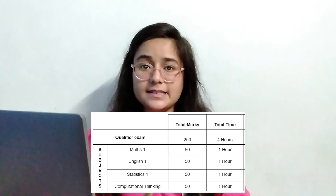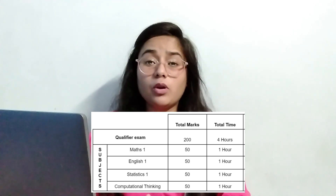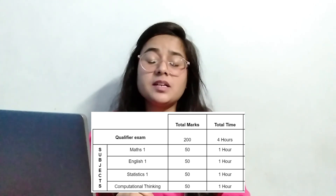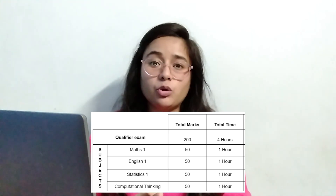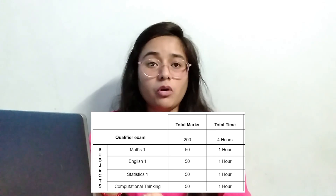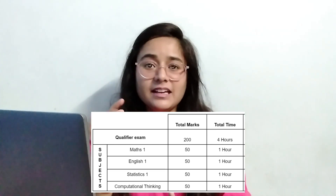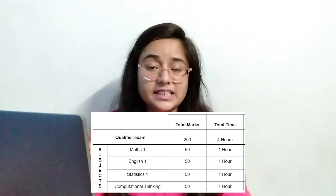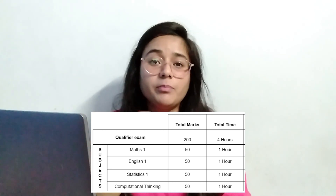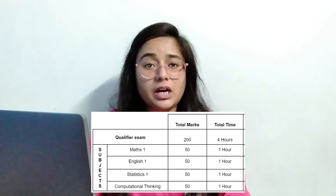After that, let's talk about the qualifier exam pattern. The qualifier exam is 200 marks in total. You have 1 hour per subject, which means 4 hours in total. The exam slot is not one hour — it is spread across subjects. And as I mentioned, the total comes to 200 marks.